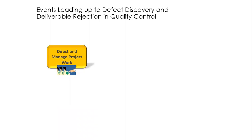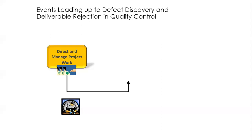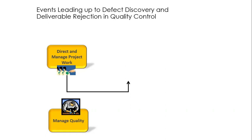Remember that your deliverable is an output of the process known as direct and manage project work. That process gives you deliverables, but before your deliverable is produced, you should be managing quality. Prevention is better than cure. Prevention is managed quality — you are keeping errors out of the process. You're conducting quality audits and making sure that before the deliverable is even produced, your quality processes and engineering processes are all good. So process comes before product.